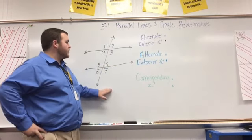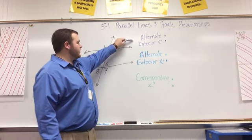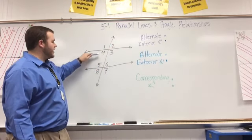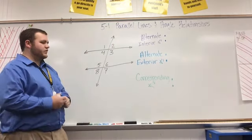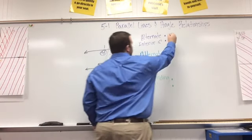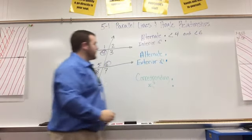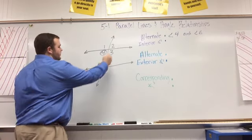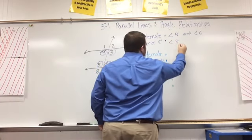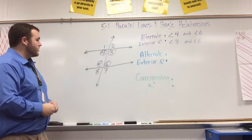Now I want to recap everything. I'll list all alternate interior, alternate exterior, and corresponding angle pairs. Alternate interior angles are on the inside of the parallel lines and opposite the transversal. The first pair is angle 4 and angle 6, and the second pair is angle 3 and angle 5.